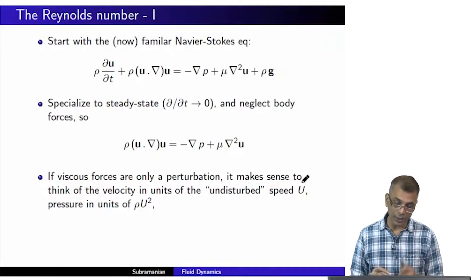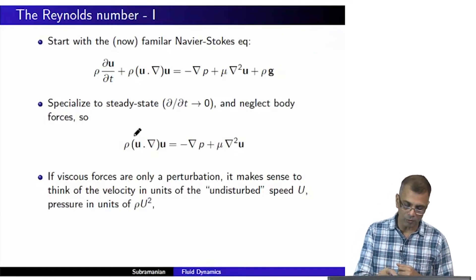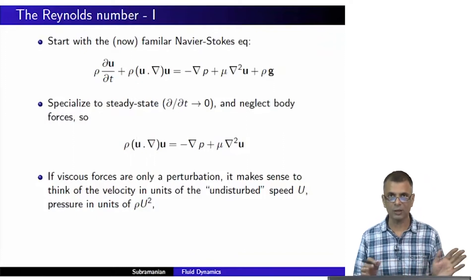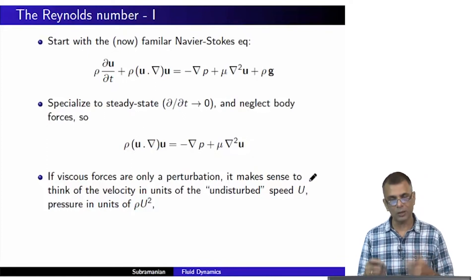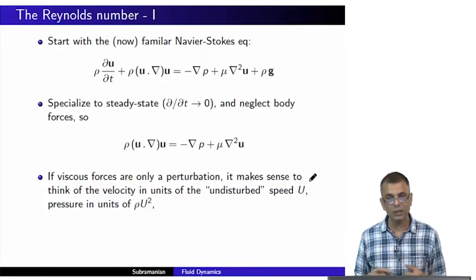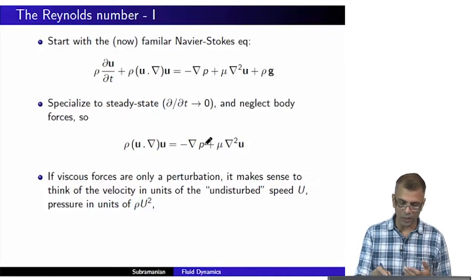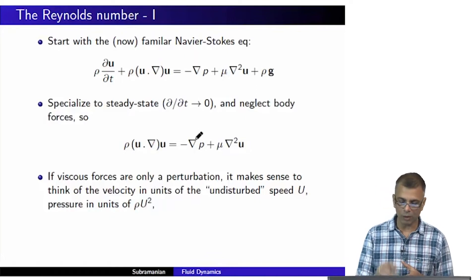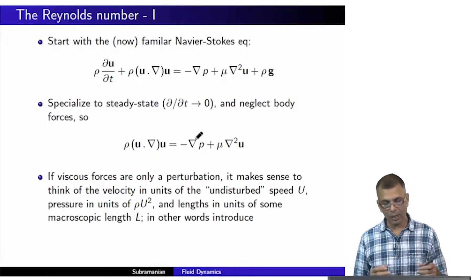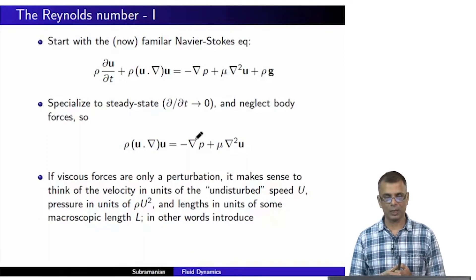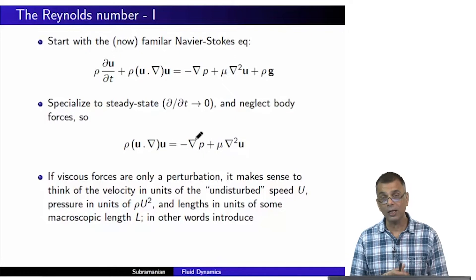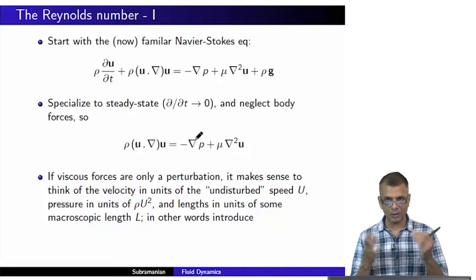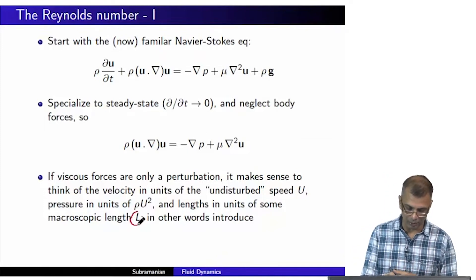It makes sense to consider velocities in units of this undisturbed speed U, so we divide small u by capital U. We can also consider pressure in units of rho U squared — you can verify this has the units of pressure. Wherever we see p, we divide by rho U squared. Lengths are measured in units of some macroscopic length L. For instance, for flow past a sphere of diameter one centimeter, the macroscopic length would be around one centimeter, certainly not one meter or one millimeter.